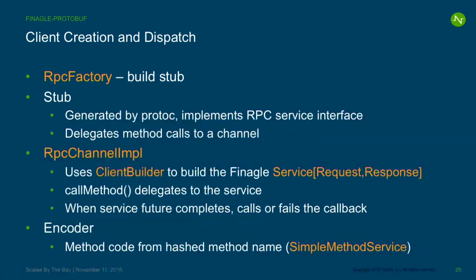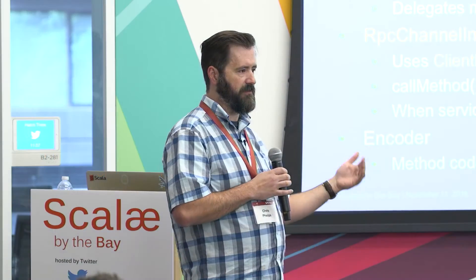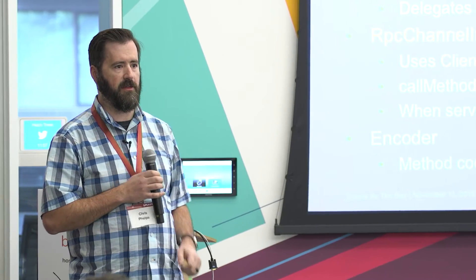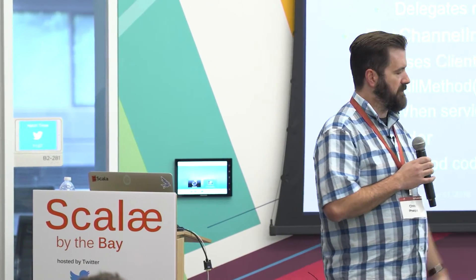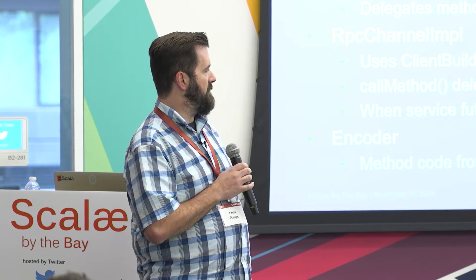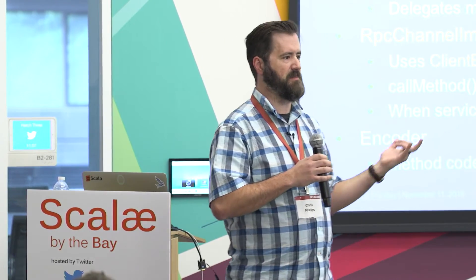The RPC factory builds a stub. The stub is generated by proto-c, implements the RPC service interface, and delegates method calls to a channel. The channel we use is the RPC channel impl, which uses client builder to build the Finagle service. The call method delegates from the stub to the channel impl to the Finagle service. When the Finagle service's future completes, we resolve all callbacks. Underneath, we go through our encoders — taking the method name, using its hash code as the code the server uses to figure out which method to call.